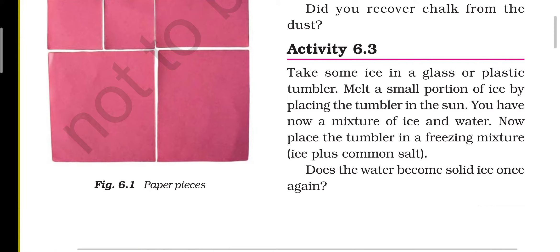Next activity: take some ice in a glass or plastic tumbler. Melt a small portion of ice by placing the tumbler in the sun. Agar aap barf ko sunlight mein rakhenge toh melt hona start ho jayegi. You now have a mixture of ice and water. Now place the tumbler in a freezing mixture of ice plus common salt. Does the water become solid ice once again?